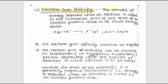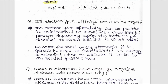Electron gain enthalpy is defined as the amount of energy released when an electron is added to the outermost shell of one mole of an isolated gaseous atom in its lowest energy state. There is a question: is electron gain enthalpy positive or negative?